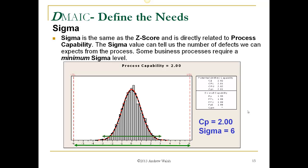Sigma is the same as the Z-score, which is directly related to process capability. The Sigma value tells us the number of defects we can expect from a process, and some business processes require a minimum Sigma level. Because defect rates are well known for each Sigma level, it provides a simple number for management to understand exactly where the process stands. In this example, the process fits well within specifications with a process capability of 2.0, which is equivalent to Six Sigma — the goal. The graph shows about three standard deviations on either side of the process outer limits, providing plenty of buffer to keep the process from running outside specifications and therefore producing no defects.